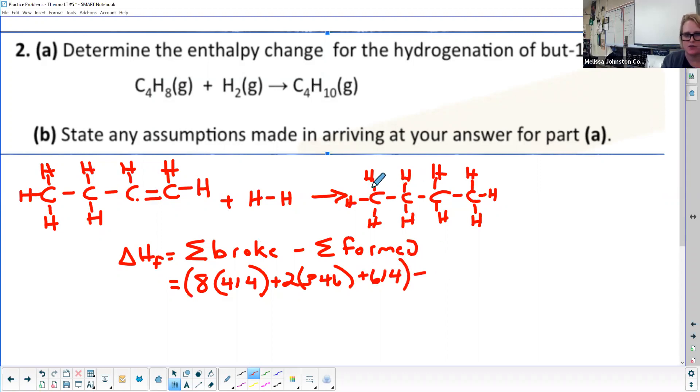Minus, and then this one's one, two, three, four, five, six, seven, eight, nine, ten carbon-carbon hydrogen bonds—so 10 times 414—plus one, two, three carbon-carbon bonds, and carbon-carbon was 346, one, two, three of them: three at 346.